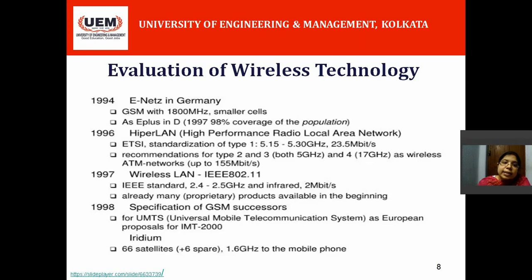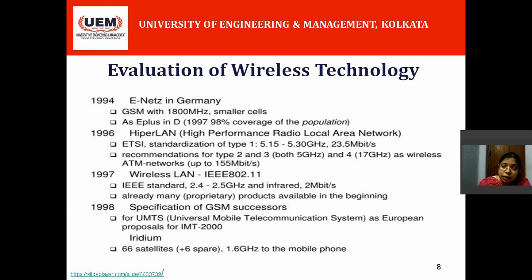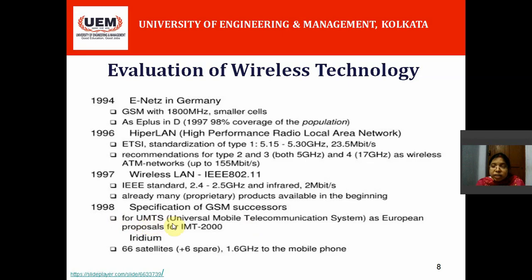In 1994, E-Nets came in Germany. In 1996, HyperLAN — High Performance Radio Local Area Network — was introduced. In 1997, wireless LAN came into the picture, also known as the IEEE 802.11 standard. In 1998, some standards were added to GSM, improving second-generation mobile telephony towards third generation. There is a generation between 2G and 3G called 2.5G, and technologies like UMTS and GPRS are known as 2.5 generation.